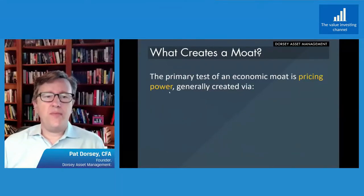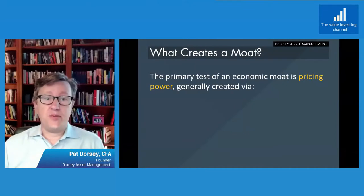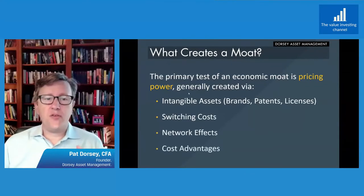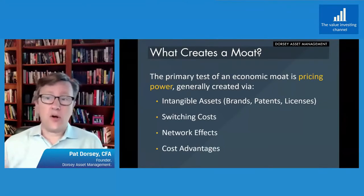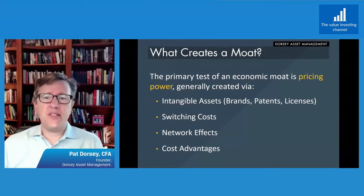We'll do a quick background on what creates moats. Those of you who have read any of my books may be familiar with this. The primary test is pricing power, because moats are usually created via intangible assets — a brand, patents, or the like — switching costs, or network effects. There are some exceptions where Amazon or Costco might compete based on shared scale economies. But generally, if the business does not have some kind of pricing power, it probably doesn't have a moat.